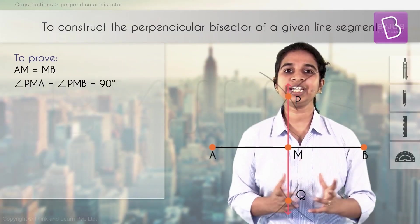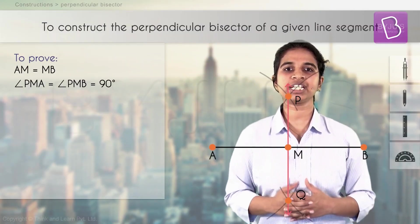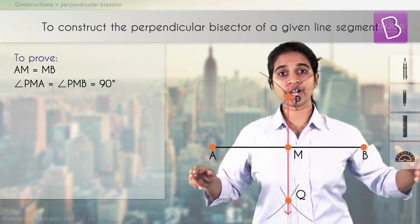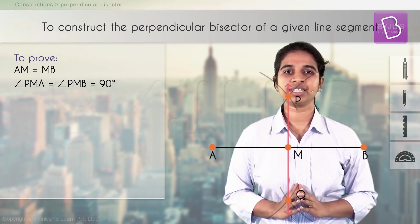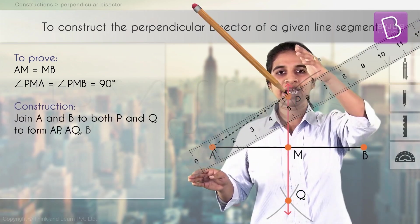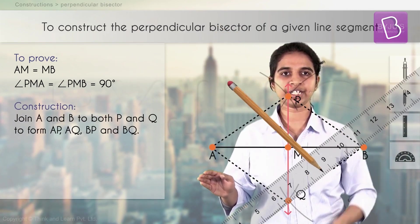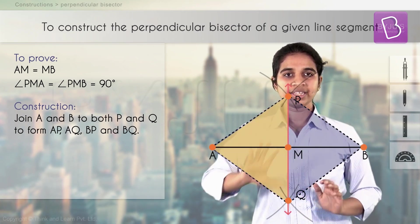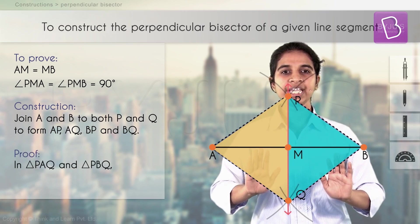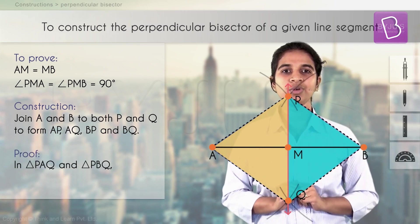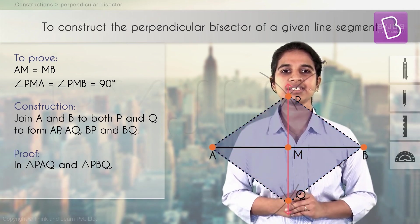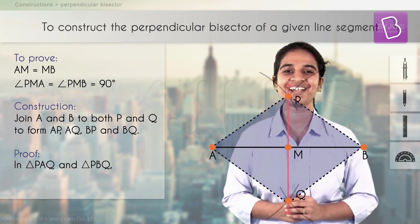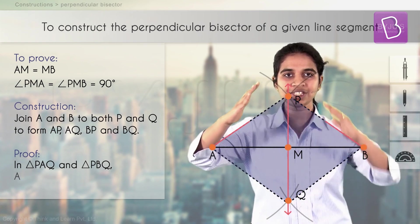How do we start proving? We need to get triangles because everything is going to be proved using congruency. To get triangles, we join all the points we constructed. So let's join A and P, B and P, A and Q, B and Q. Now look at these two triangles PAQ and PBQ — they are congruent. Why? SSS test. Always start with the SSS test.